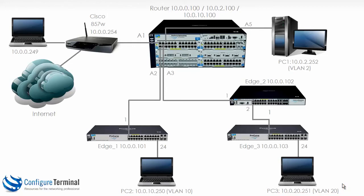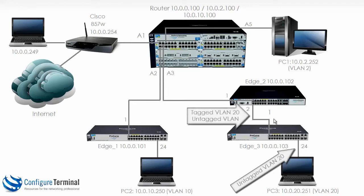This is slightly more complicated. Port 24 needs to be configured as untagged for VLAN 20. Port 1 needs to be tagged for VLAN 20 and untagged for VLAN 1. Port 2 on edge 2 needs to be configured as tagged for VLAN 20 and untagged for VLAN 1. VLAN 1 is required across this link to enable management of edge 3, which has its management VLAN in VLAN 1, but needs to be tagged for VLAN 20 to allow communication to PC3.